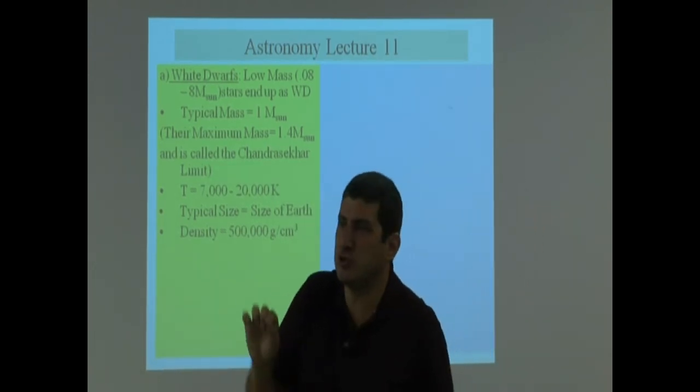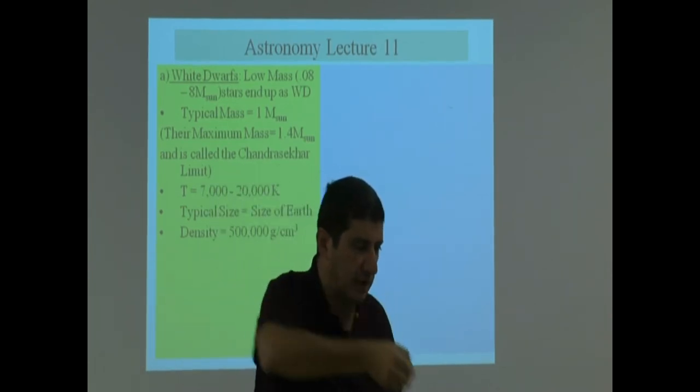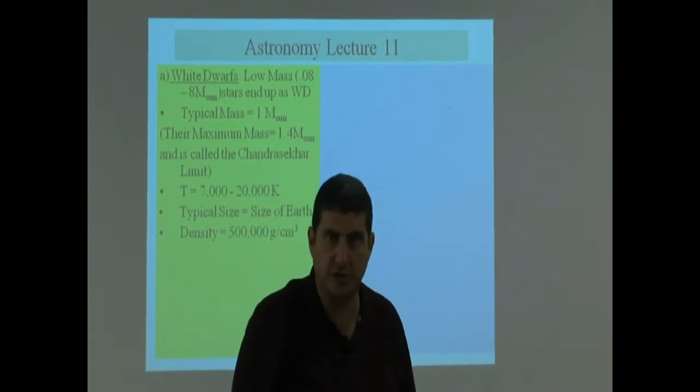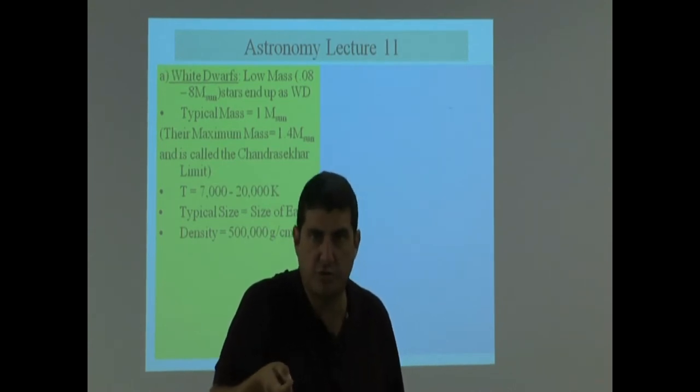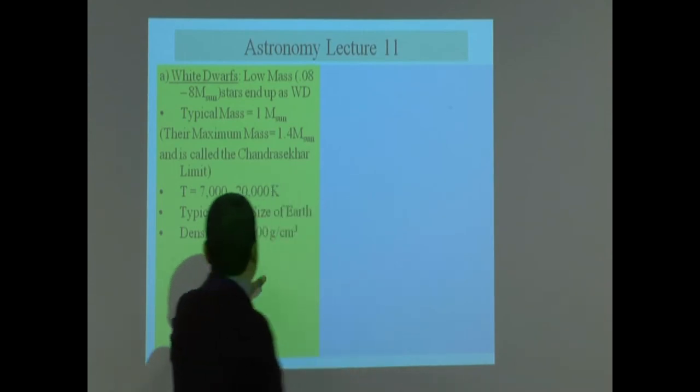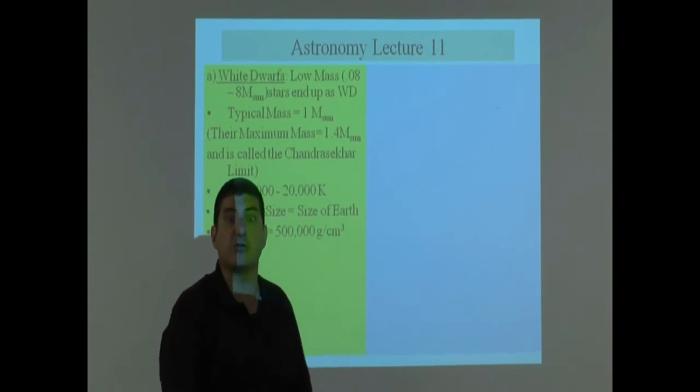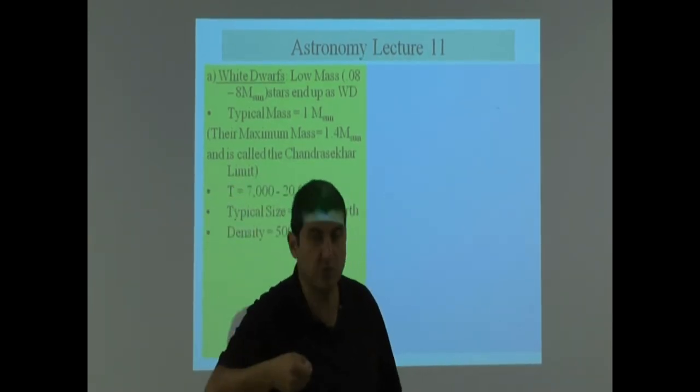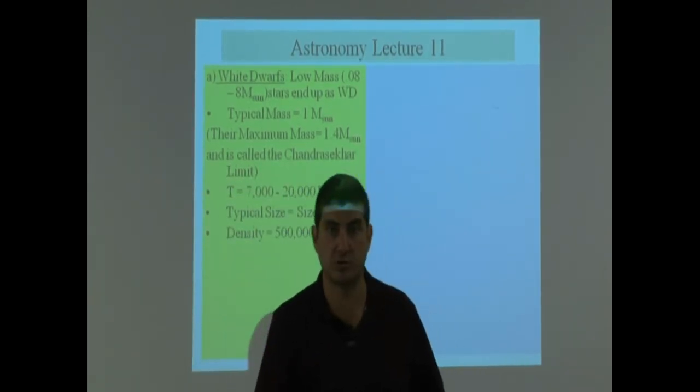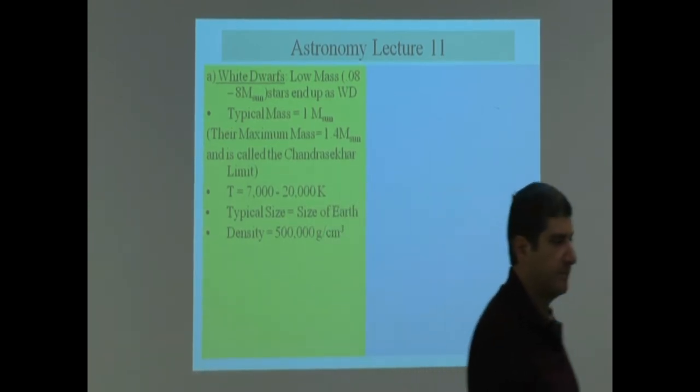If I ever were able to go to a white dwarf and take a little spoonful and give it to you, would you be able to carry it? One spoon of a white dwarf? No. One spoon would weigh 500 kilograms, roughly about 1,000 pounds. One spoon of a white dwarf is about 1,000 pounds. You'll fall down because that's how dense it is.